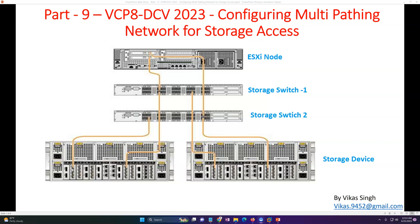In this typical environment you can see two storage boxes with two controllers. Each storage is connecting to both SAN switch 1 and SAN switch 2, and the ESXi host is also connecting to both switches. The top ESXi host connection goes to switch 2 and the bottom storage connection comes to switch 1.